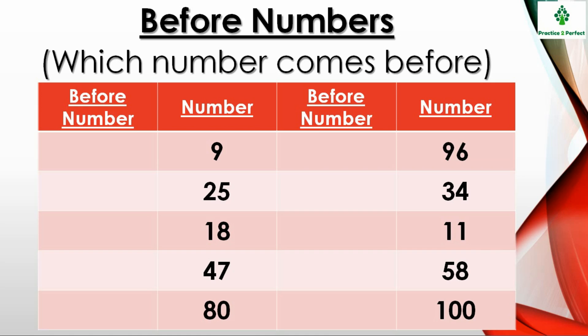Before numbers. The number column lists a few numbers like 9, 25, etc. In the before number column you have to write the number that comes just before the given number.